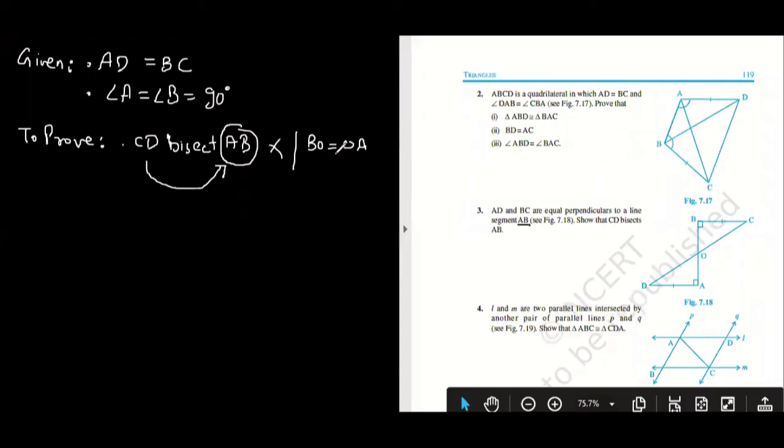That's what you should write. So we have to prove that BO is equal to OA. You should not write statements; you should interpret the statement and write the meaning in mathematical way. CD bisects AB, so AB is getting bisected. Look at the figure—AB is here, so we will write AO equals OB. That's what I need to prove. So this is to prove.